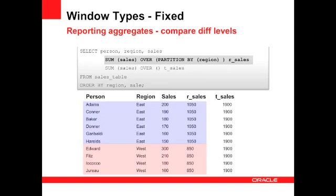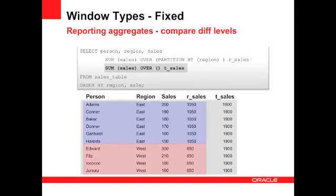The first analytical function groups the data by region to create a regional total for sales. The second analytical function creates a grand total for sales. The use of the blank OVER syntax generates the final table total across the whole data set.